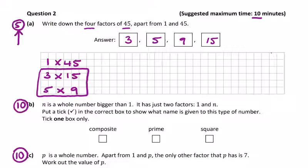The marks are now visible on the side. Part B: n is a whole number bigger than 1. It has just two factors. You should be immediately thinking prime numbers: 1 and n. Put a tick in the correct box to show which name is given to this type of number - composite, prime or square. Prime number only has two factors.